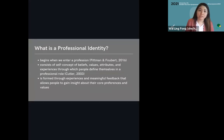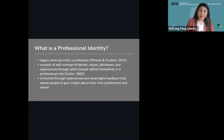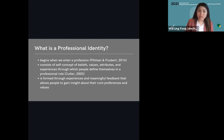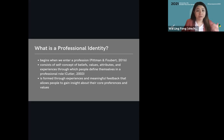A professional identity is something we develop when we enter a profession — once we enter a new career, that's when it begins. Developing a professional identity helps us connect our individual self to the work we do. It consists of our beliefs, our values, our attributes, and the experiences we bring. It is often formed through experiences and meaningful feedback from people around us, and that feedback eventually solidifies and becomes the professional identity we hold.